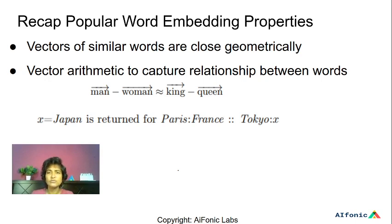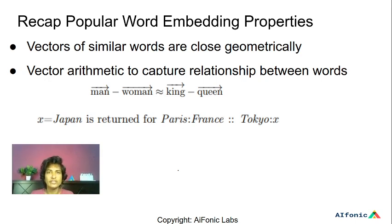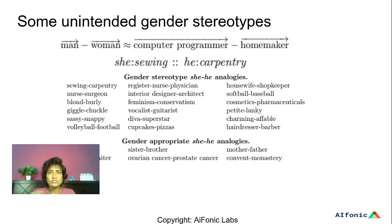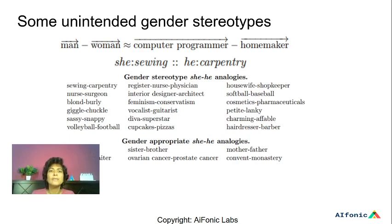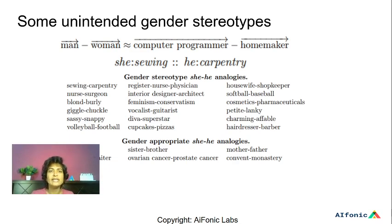Similarly, you can use embeddings for analogy tasks such as: Paris is to France as Tokyo is to what? — and the answer is Japan, automatically finding the capital relationship. But there are also unintended things that emerge in these embeddings, like gender stereotypes. For instance, man minus woman is also similar to computer programmer minus homemaker. This is not intended, because it means computer programmer is being associated with man and homemaker with woman, which is gender stereotyping.